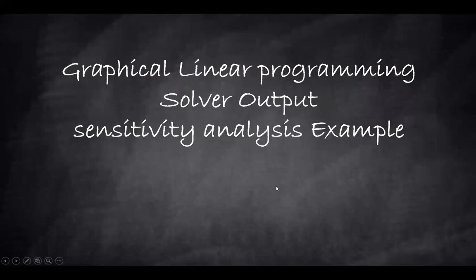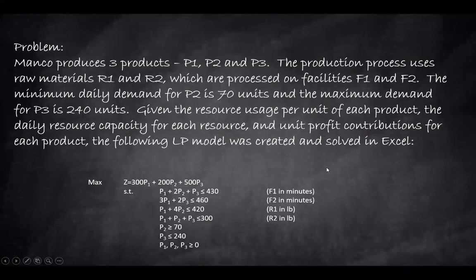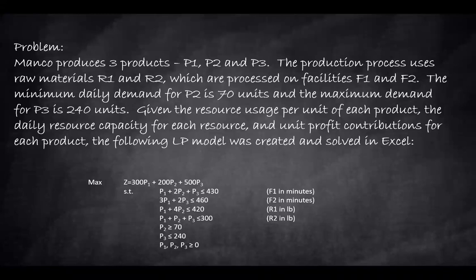Hello. In this example I will show you how to analyze the solver output and especially the sensitivity report. Here is a problem. We produce three products P1, P2, and P3. The production process uses raw material R1 and R2, which are processed on facilities F1 and F2. The minimum daily demand for P2 is 70 units and the maximum demand for P3 is 240. Given the resource usage per unit of each product, daily resource capacities, and unit profit contribution for each product are shown in the linear programming formulation on the bottom part here.